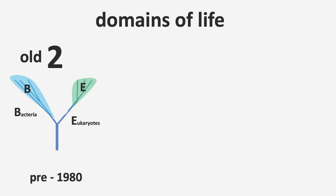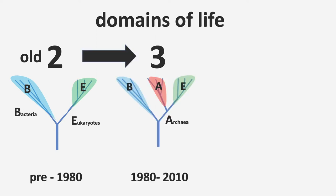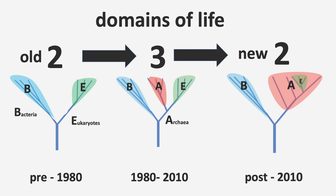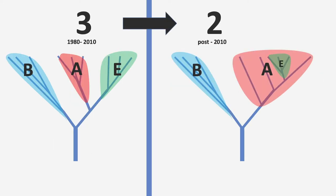In terms of domains of life: the old system, pre-1980, there were two domains — bacteria and eukaryotes. Then three domains, because of Woese and Fox, from 1980 to 2010. You will still see people talk about the three domains of life. But more recently, post-2010, the eukaryotes are now embedded in the archaea. That is a fundamental change in our understanding of the phylogenetic tree of life. To summarize: three domains turned into two domains, with the eukaryotes embedded in the archaea.